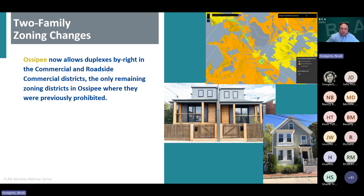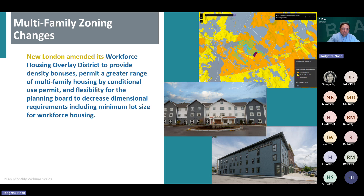Ossipee, as a result of amending their zoning ordinance in 2023 to permit duplexes by right in its commercial and roadside commercial districts, now allows duplexes or two-family dwellings in all seven of its zoning districts if you meet all lot size and dimensional requirements. New London amended its workforce housing overlay district in 2023 to provide density bonuses and allow a range of housing types including garden-style multifamily workforce housing and multifamily workforce housing townhomes in all zoning districts by conditional use permit. It also gave additional flexibility to the planning board to waive certain dimensional requirements for workforce housing.